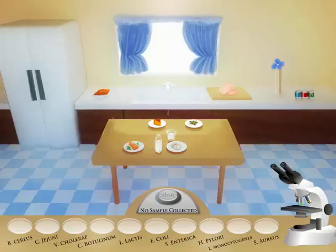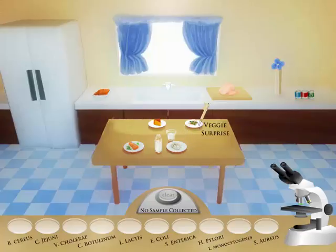The simulation starts with the kitchen and lab table scene. To begin, sample a location in the kitchen. You can do this by placing the pipette icon over a location in the kitchen and clicking your left mouse button.